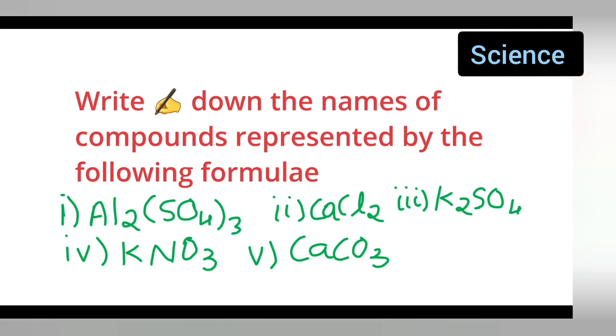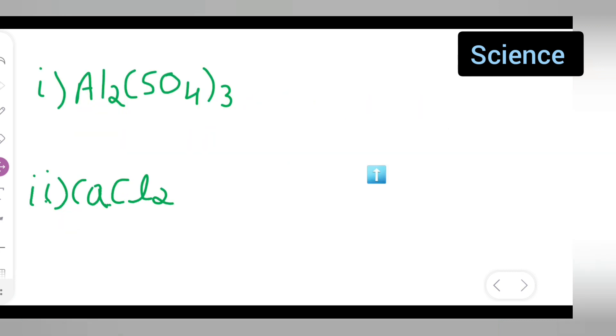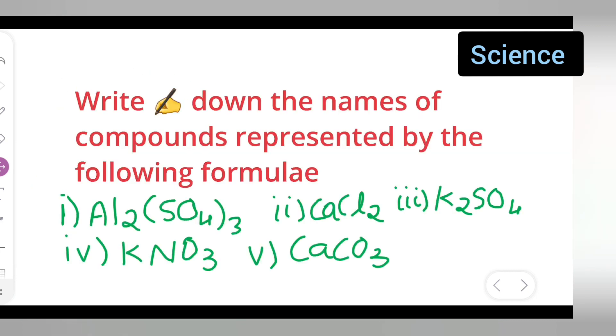...represented by the following formulas. First one is Al2(SO4)3, second one is CaCl2, third one is K2SO4, fourth one is KNO3, and fifth one is CaCO3. Okay, so let us write the names of the compounds.